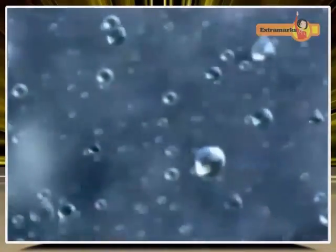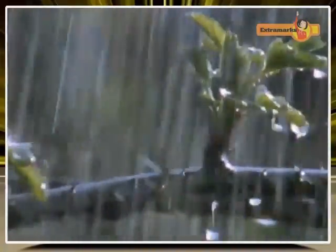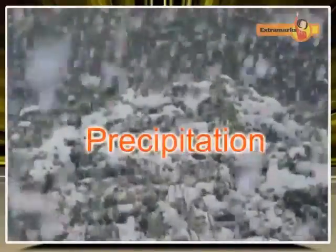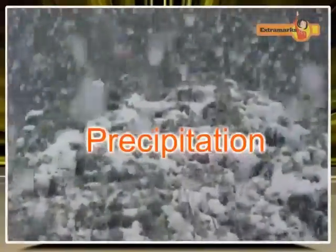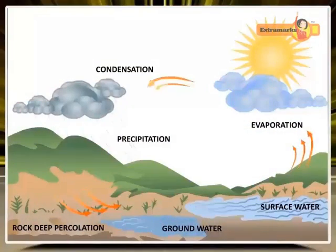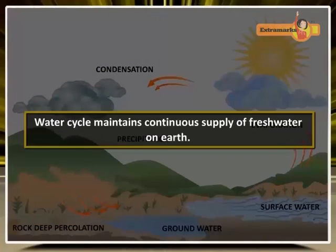When so much vapor gets condensed into water droplets that the air cannot hold them anymore, the water falls back to earth as rain, hail, sleet, or snow. This process is called precipitation. This circulation of water in Earth's atmosphere is known as the water cycle, which maintains a continuous supply of fresh water on Earth.